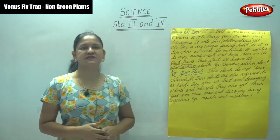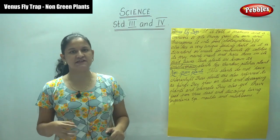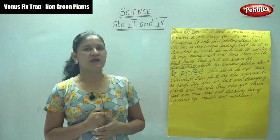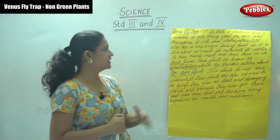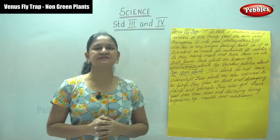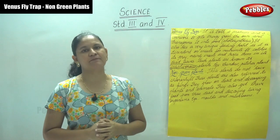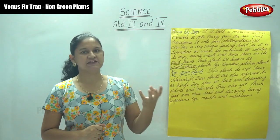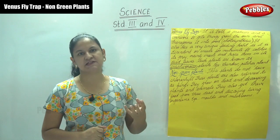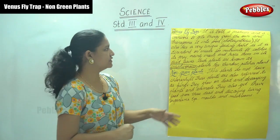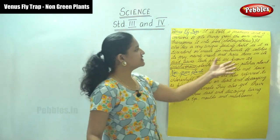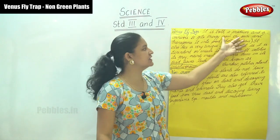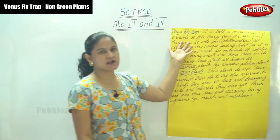We are going through some amazingly different plants. First we saw the cactus plant, which is a desert plant. Next is the Venus flytrap. From the name itself, we come to know that it traps insects and then eats them. A Venus flytrap is both a producer and a carnivore.